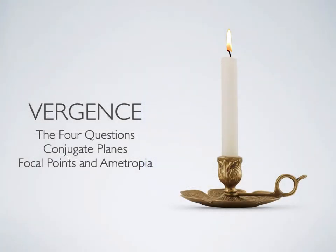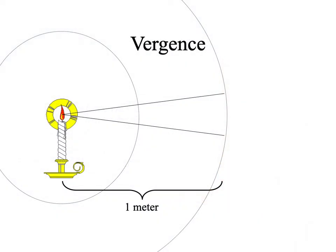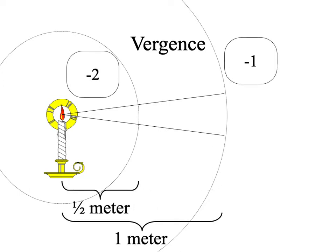Let's talk about vergence. Vergence is a description of the shape of the wavefront of the light coming off of a candle, but we're going to view vergence as just an abstract concept — the inverse in meters from where we are to where the rays of light converge. Here, the rays of light converge at the flame. When we're one meter from the flame, the rays of light are converging one meter to our left. The inverse of that is one.